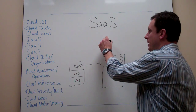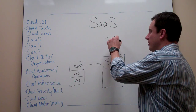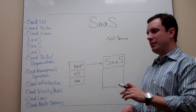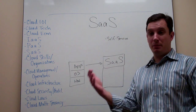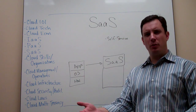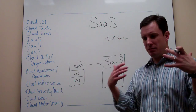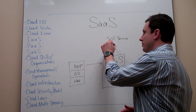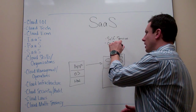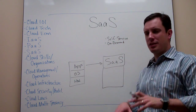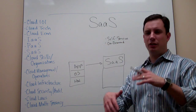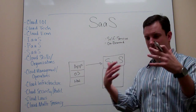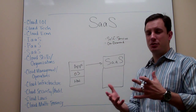SaaS delivers applications in a way that is self-service — you just go to the website and sign up for it. It might be free, it might have a charge, but it's self-service. You can get engaged with the application by yourself. It's on demand — you don't have to put in a request to some organization to get a login. You just log in, create a login, and start doing things with the application right away.